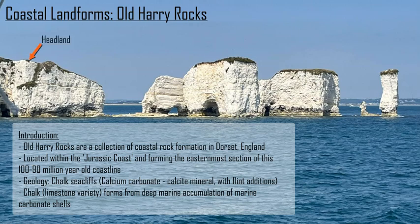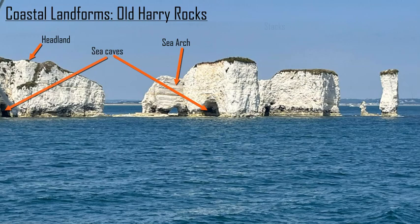You have a sequence and series of stacks and stumps. There are some sea caves and some sea arches that form off the headland to the left. These series of rocks to the right — these stacks and stumps — form Old Harry's Rocks, and the name derives from multiple myths and legends.